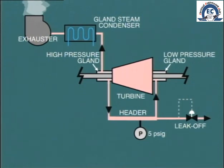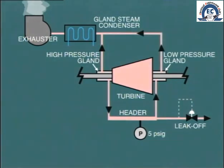Of course, some of this will try to pass along the shaft in the opposite direction to atmosphere. But this is captured by the gland steam exhaustor in the same manner as for the high-pressure gland seal. So we can see that leak-off steam from the high-pressure end is useful in providing sealing steam at the low-pressure end.